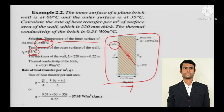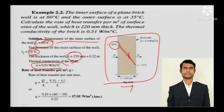The thickness of the wall is L = 220 mm. The thermal conductivity of the brick — everything is provided in the numerical and you know Fourier's law. By this time you should be knowing Fourier's law: Q = minus k A dT by dx.